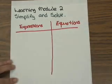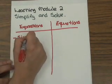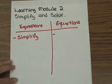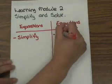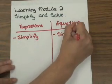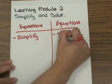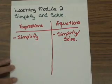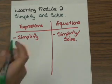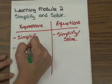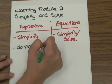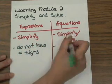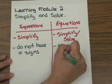With expressions, the only thing that can be done is simplifying. In order to solve equations, you must simplify first, and then you solve. The major physical difference you're going to see is expressions do not have equal signs, while equations have equal signs.